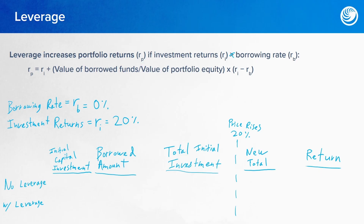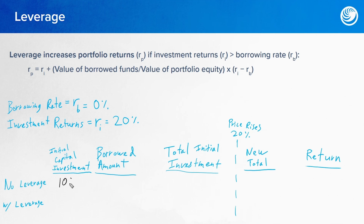I'm going to dive into an example that can illustrate how all of this works. There is a formula for calculating portfolio returns, but I'm going to do it a more intuitive way and then we'll jump into the formula afterwards. So let's say hypothetically that we could borrow at 0% — our borrowing rate is 0% — and our investment returns 20% in hindsight. Let's walk through two different calculations for portfolio returns, one with leverage and one without, with an initial capital of $100,000 in both situations.